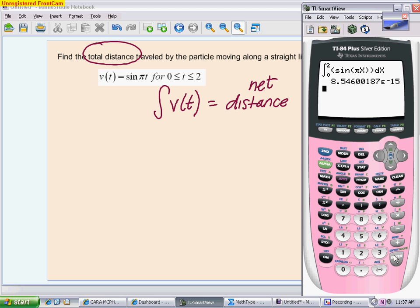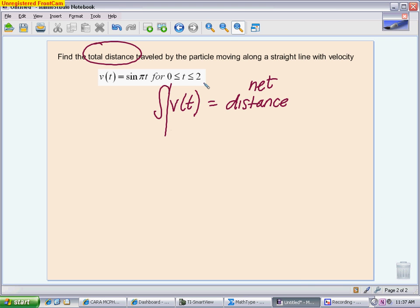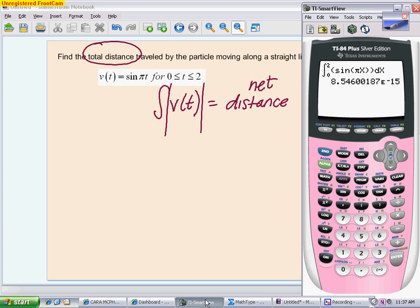If I want to find my total distance, I have two options. One option, especially if there's a calculator problem, is I could just take the absolute value of that velocity function. The calculator will take care of that for you if you include absolute values. Let me show you what I mean by that on my calculator. If I take the exact same setup, so I'm going to go back to math 9. I'm going to put in 0 to 2. And I'm going to hit the absolute value, which is under math and number. It's the very first one. It looks like abs. And I'm going to type in the same thing inside absolute value bars. We'll get a very different answer. 1.273 units, whatever measure of distance I'm working with, that is my total distance traveled.